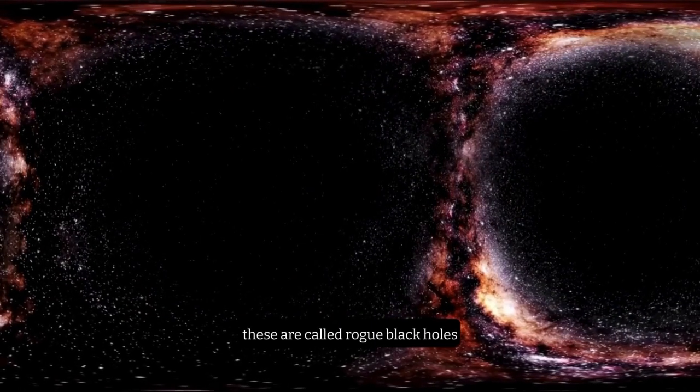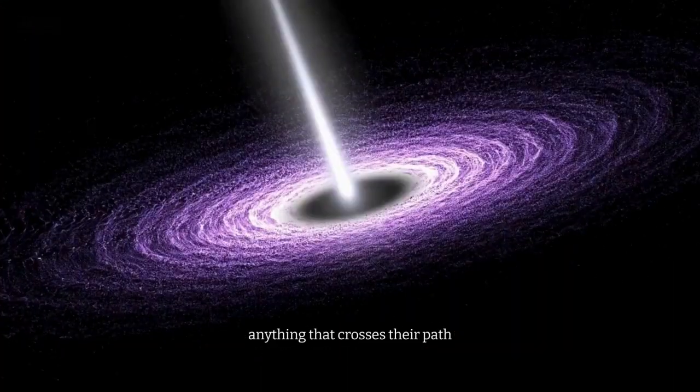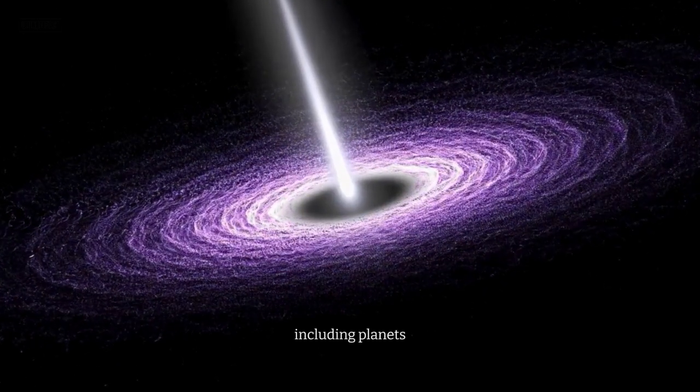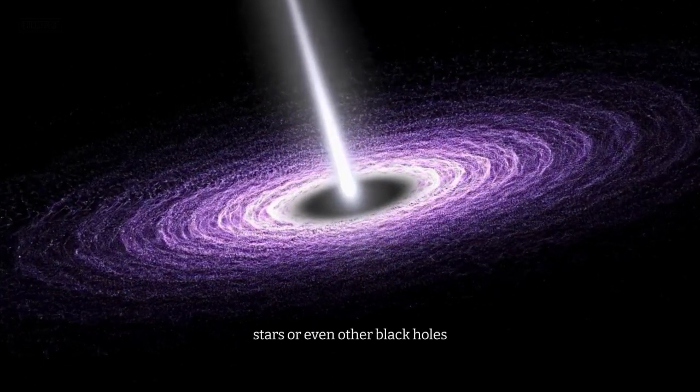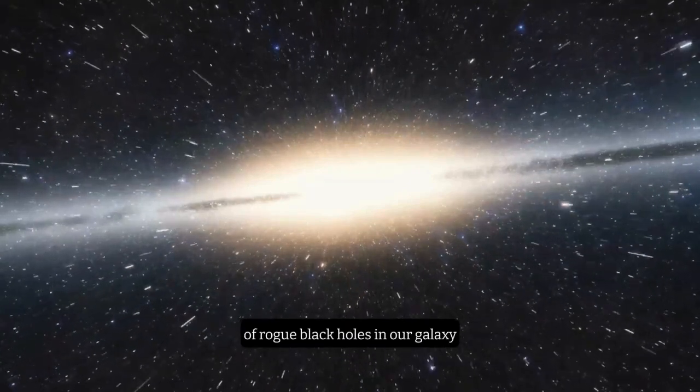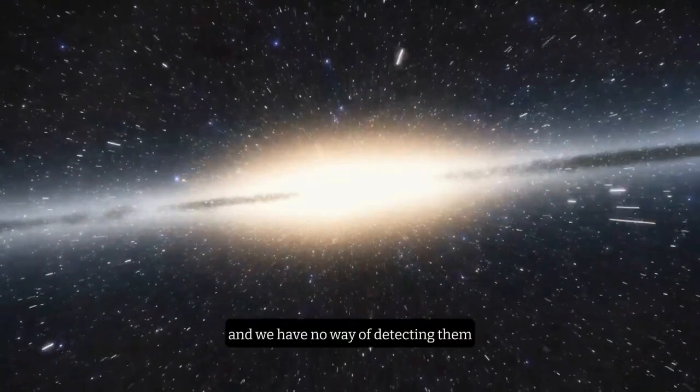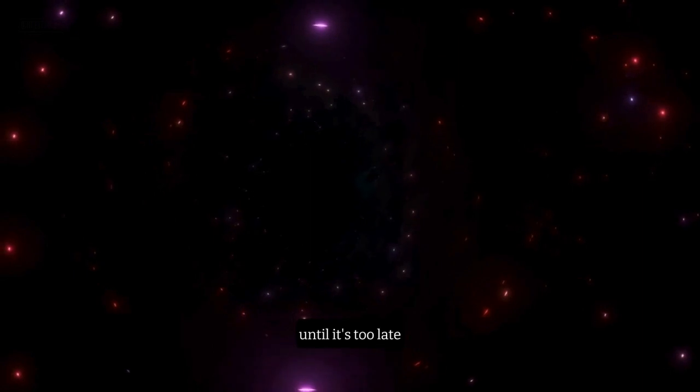These are called rogue black holes, and they can swallow up anything that crosses their path, including planets, stars, or even other black holes. Scientists estimate that there could be millions of rogue black holes in our galaxy, and we have no way of detecting them until it's too late.